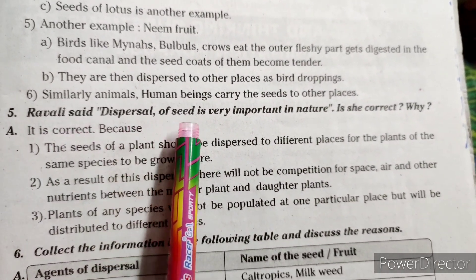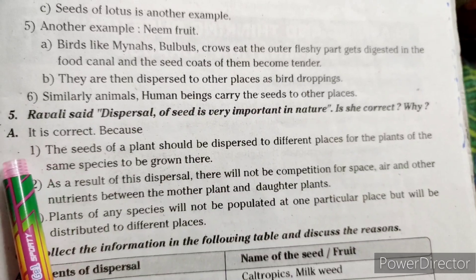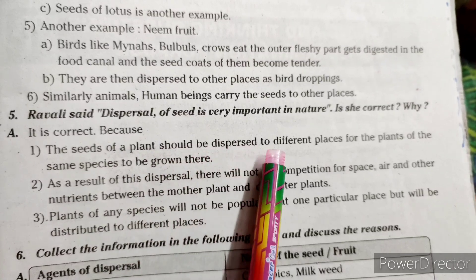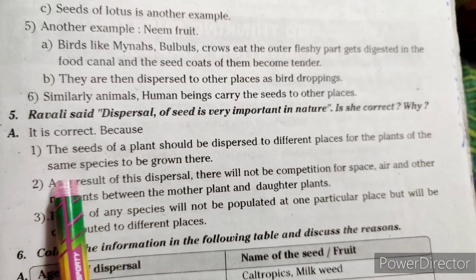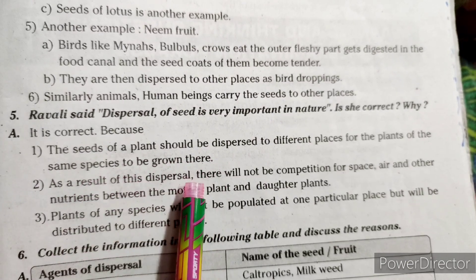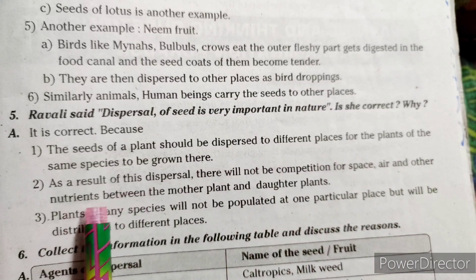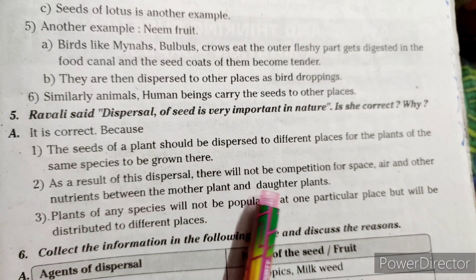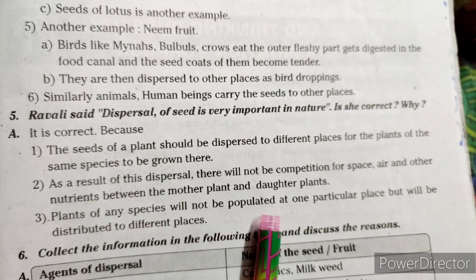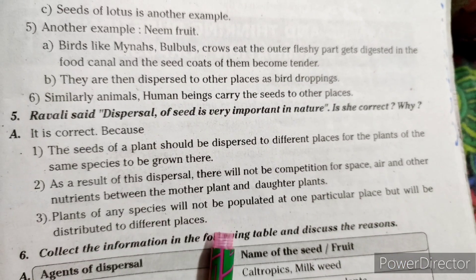Fifth question: Ravali said dispersal of seeds is very important in nature. Is she correct? Why? Yes, it is correct because the seeds of the plant should be dispersed to different places for plants of the same species to grow there. As a result of dispersal, there will not be competition for space, air and other nutrients between the mother plant and daughter plants. Plants of any species will not be populated at one particular place but will be distributed to different places.